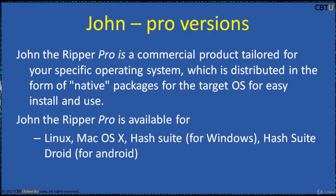John the Ripper Pro is a commercial product tailored for your specific operating system, distributed in the form of native packages for the target OS for easy installation and use. Pro versions are available for Linux, Mac OS X, Hash Suite Windows, Hash Suite Droid, and Android.